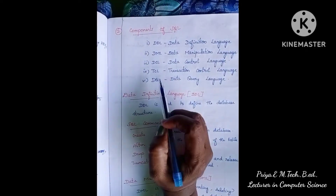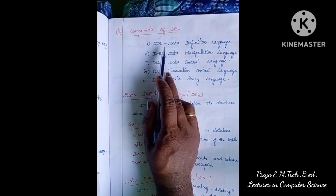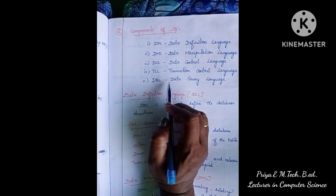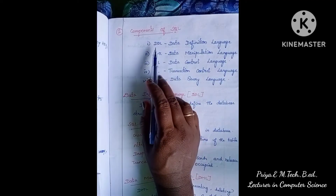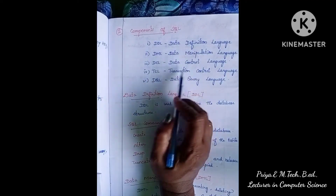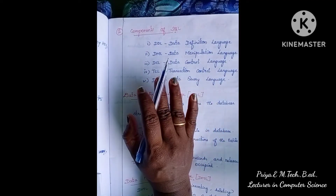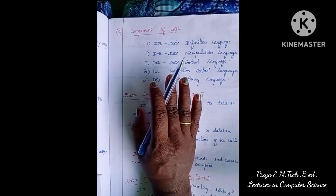SQL has 5 components: DDL, DML, DCL, TCL, and DQL. This is very important for your one-mark questions.